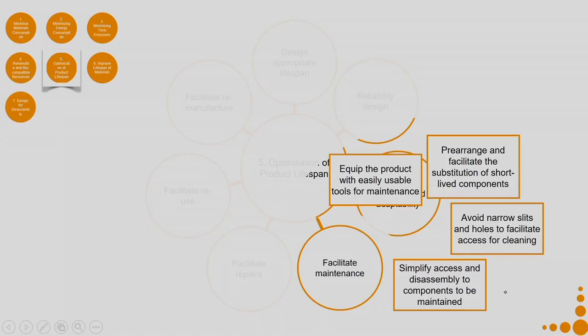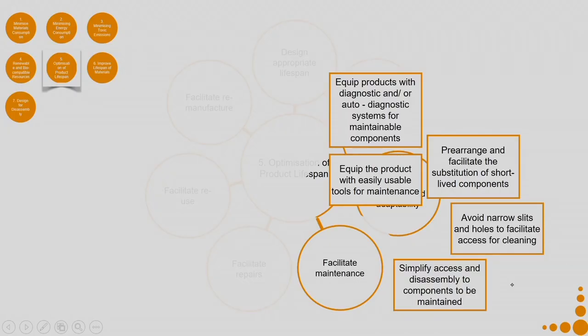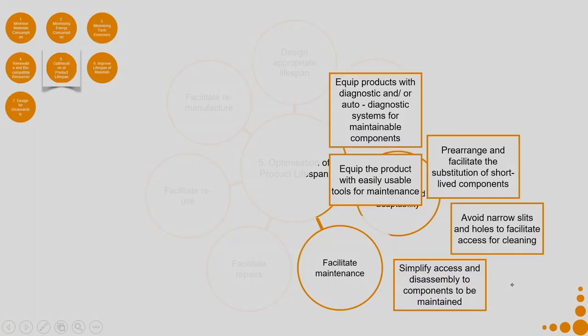Equip the product with easily usable tools for maintenance — if a particular panel needs to be removed, it should be removable with easily available tools, not a very special or expensive tool. Equip products with diagnostic or auto-diagnostic systems for maintainable components. For example, many digital components like an induction heater display an error code when there is an error — if you have a booklet with all the error codes, you can understand what kind of error is happening. The same with washing machines — they display an error code so you know exactly what diagnosis to make.